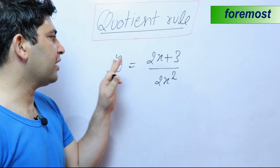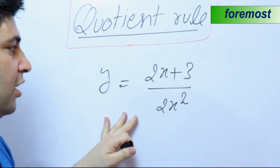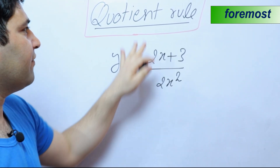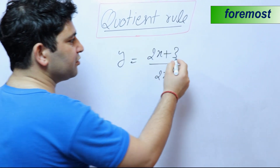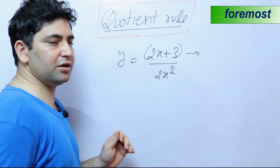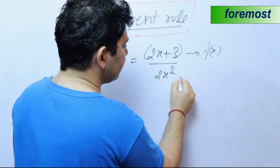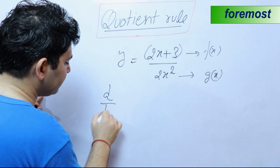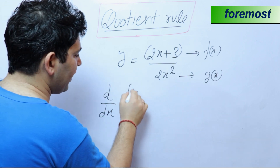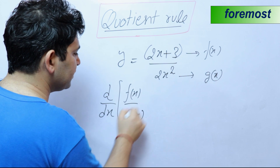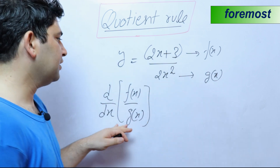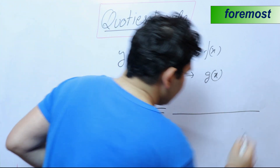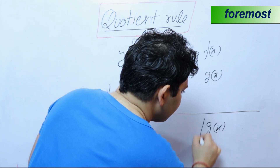Now let us see how we can apply the quotient rule of differentiation here, or how we can find dy upon dx in this function. We have a quotient rule for this case. Let us suppose the numerator — the upper one — is f of x, and the denominator is g of x. According to this rule, d/dx of f of x divided by g of x is equal to: in the denominator, g of x whole square.